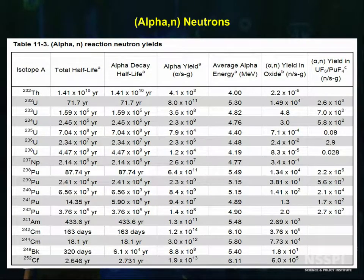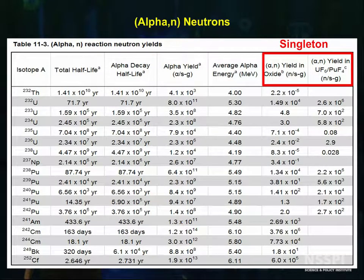Unlike spontaneous or induced fission, there are no neutron multiplicity. Each neutron produced by an alpha-N reaction is a singleton.